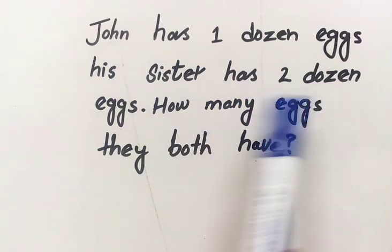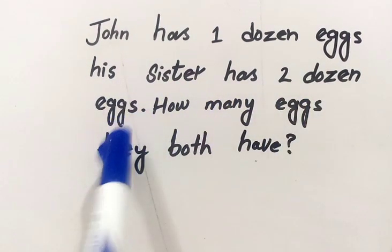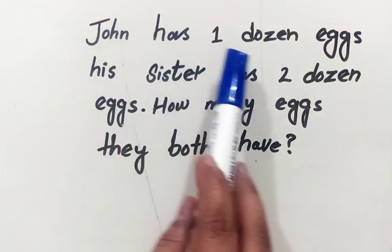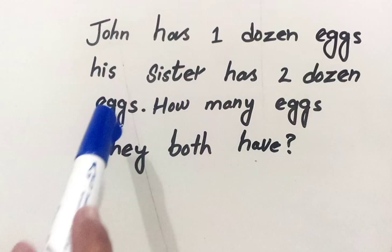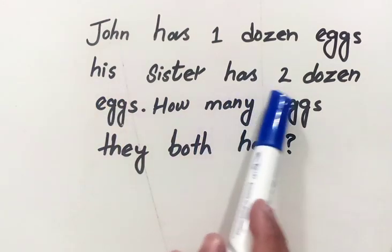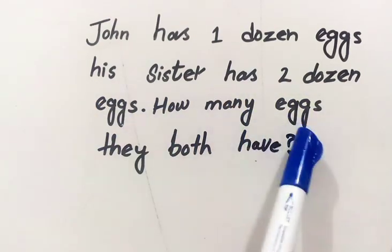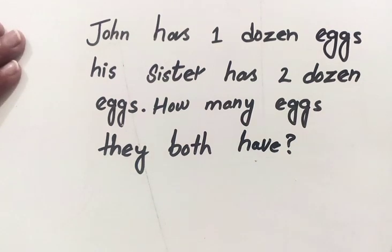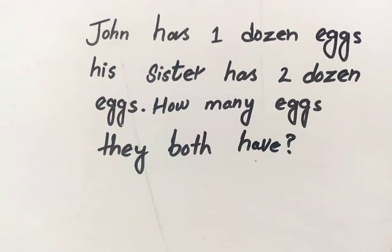Right now, first of all, John has one dozen eggs and his sister has two dozen eggs. How many eggs they both have? First of all, we have to know how many eggs are there in a dozen.